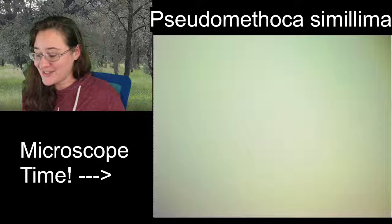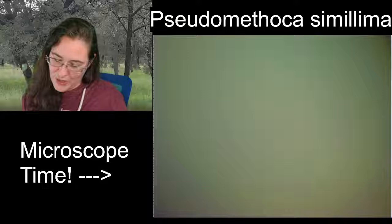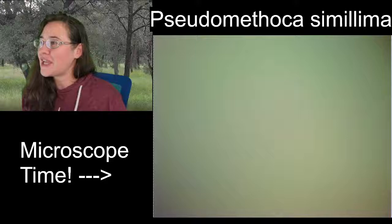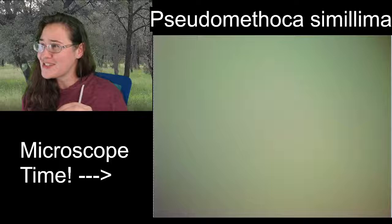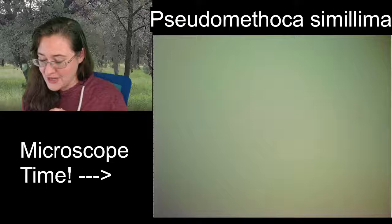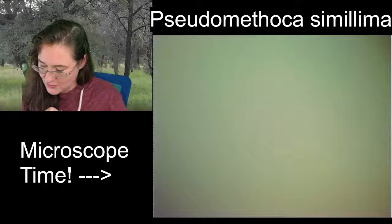Susan asks: would you rather have raptorial, natatorial, or saltatorial meso legs? Having weird meso legs of any type would be difficult because they're in the middle. If I had to choose between grabbing, jumping, or swimming with my middle legs, I'd go swimming — then I could also have natatorial hind legs and maybe swim straight.